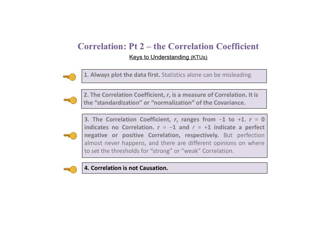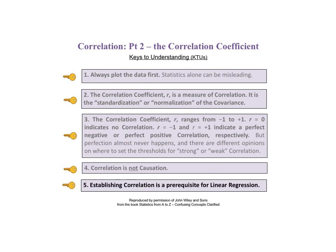The fourth key says correlation is not causation. The fifth and final key to understanding says establishing correlation is a prerequisite for linear regression.